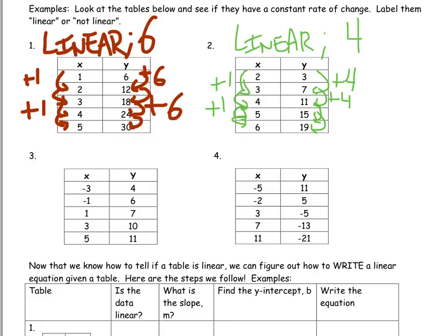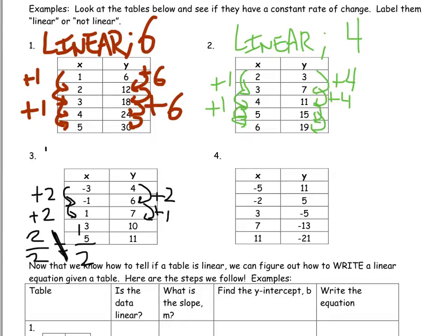Number three. What's the change from 4 to 6? Two. Negative three to negative one? Two. Six to seven? One. Negative one to one? Two. So what we have here is a slope of two over two and one over two — does 2/2 equal 1/2? No, it does not. This one is not linear.